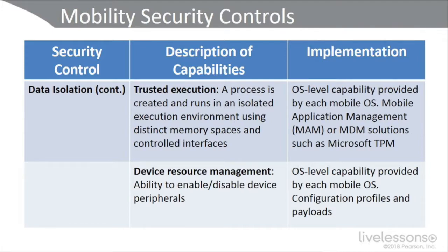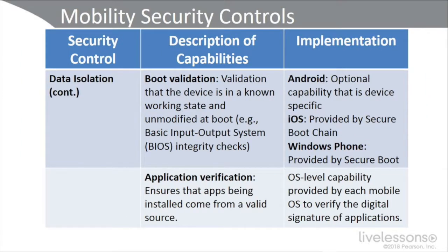We can also get data isolation through device resource management — the ability to enable or disable device peripherals — implemented through each mobile operating system or configuration profiles and payloads. We can also get boot validation: verifying that the device is in a known working state and unmodified at boot, such as BIOS integrity checks. This is optional in Android, provided by the secure boot chain in iOS, and by secure boot in Windows Phone.